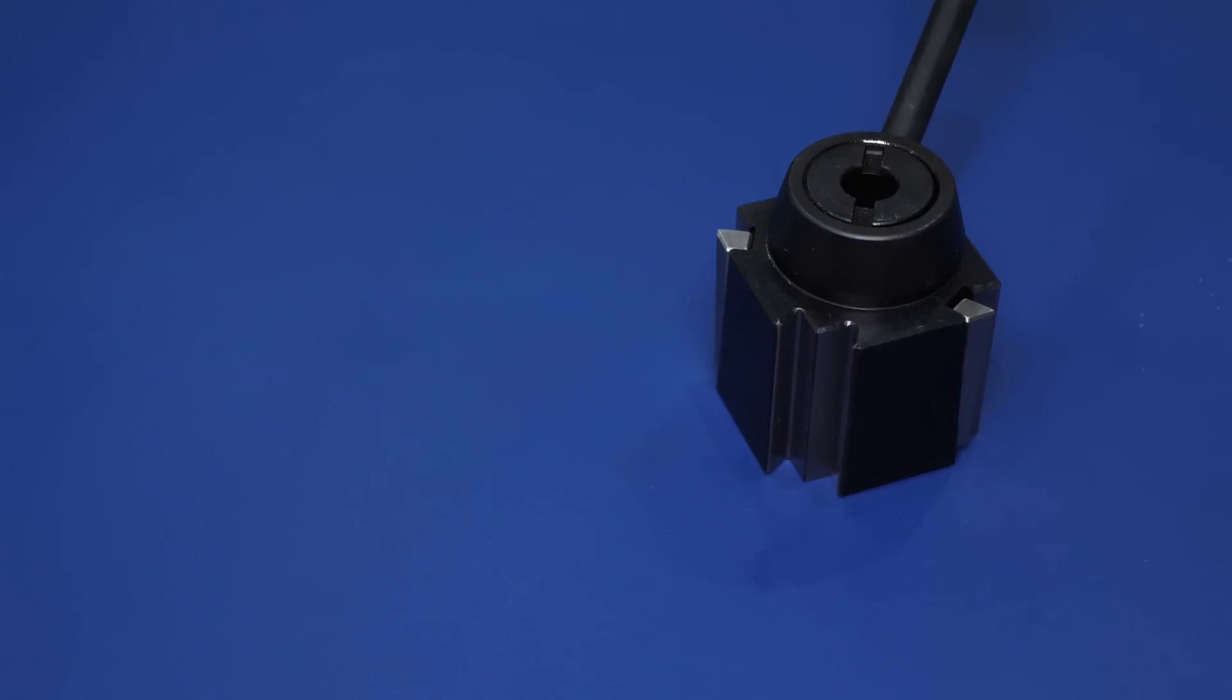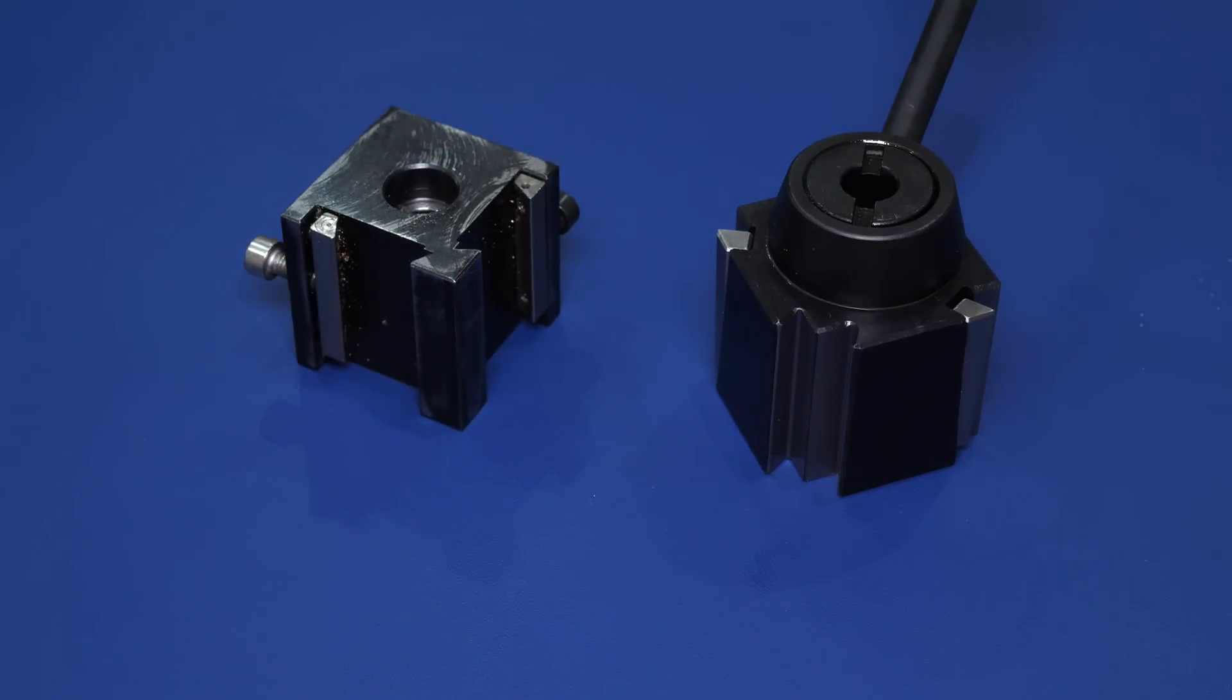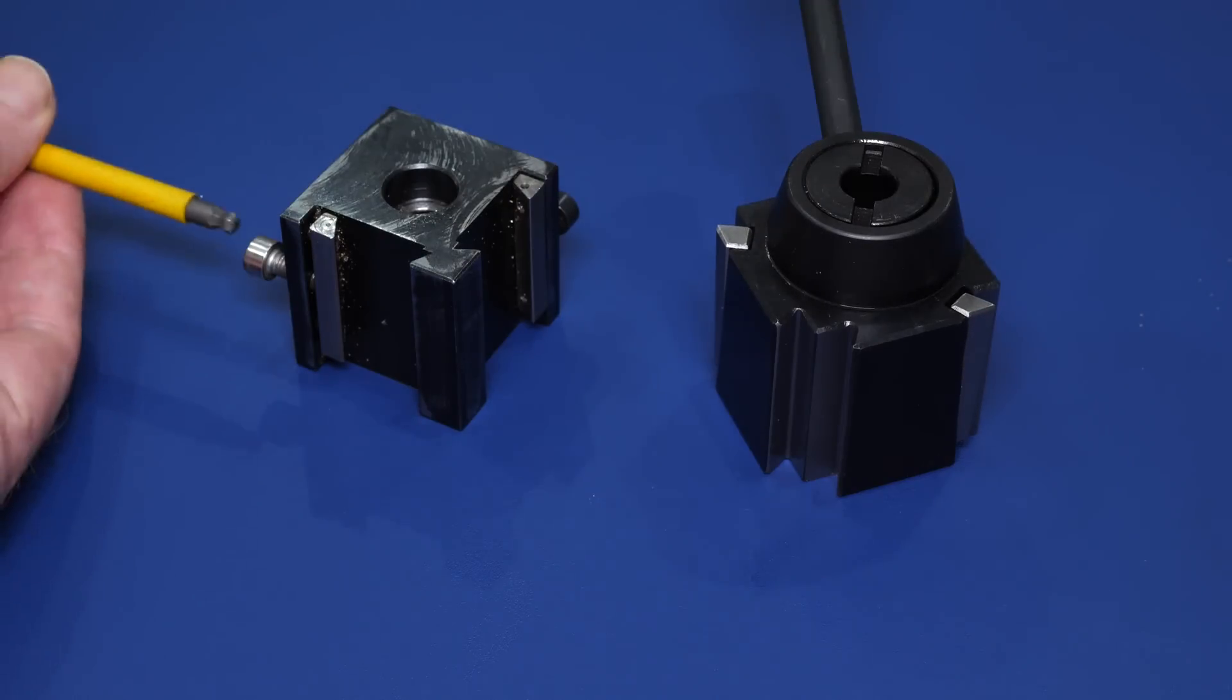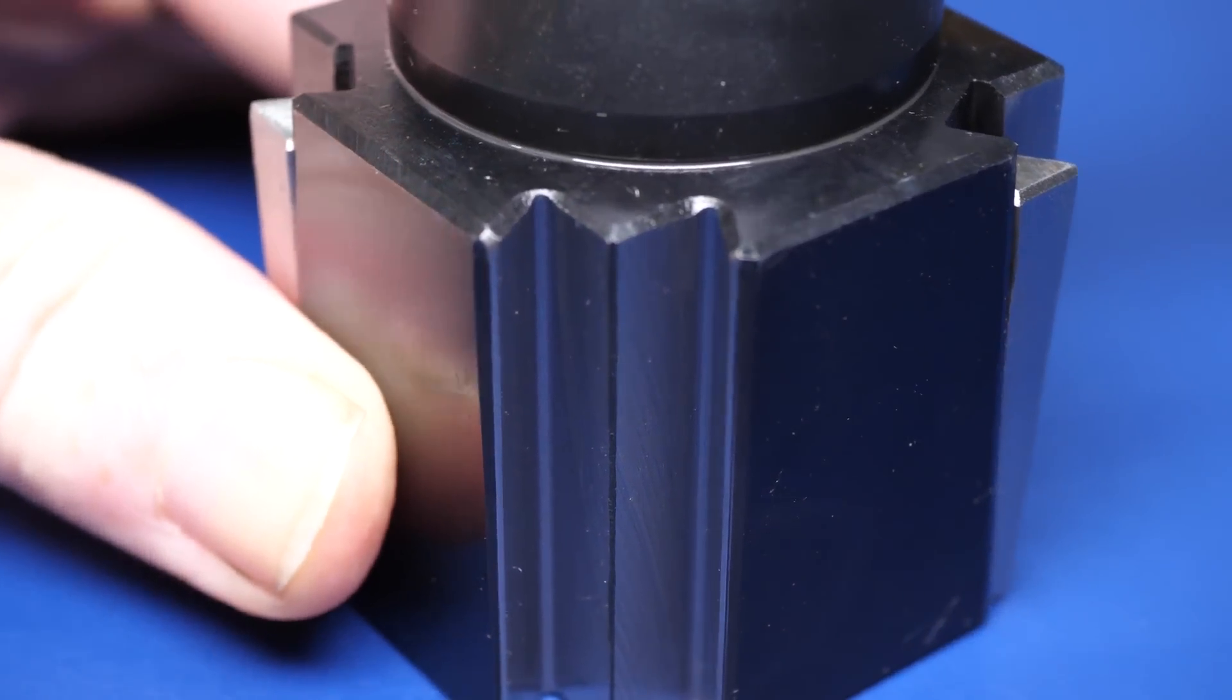The only other tool post I've used on a mini lathe is the one manufactured by Proxxon for the PD250E, so it makes sense to see how they compare. The first obvious difference is that the cuneiform gib design makes it much easier to operate more quickly than the locking screw on the Proxxon.